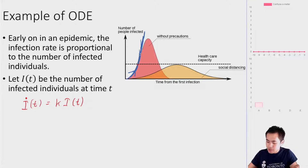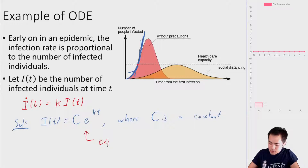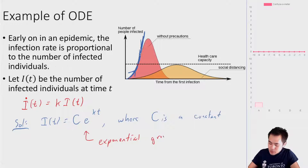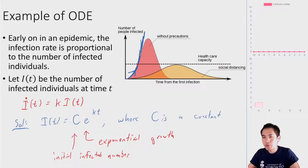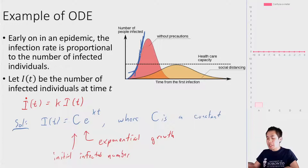This ODE has a nice closed-form solution: i(t) = C·e^(kt), where C is a constant representing the initial number infected. This is exactly why we get exponential growth — and why pandemics are so dangerous. If you're not careful initially, you get an exponentially growing number of infected people until you reach some threshold where other phenomena also take place.